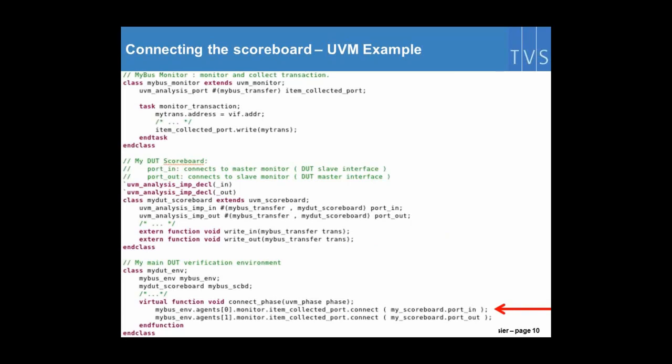To connect it, we just call the connect method of the UVM analysis port, so that we can connect the monitor to the scoreboard.